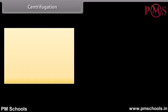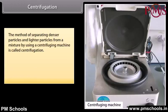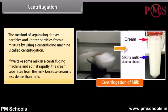Centrifugation: The method of separating denser particles from lighter particles in a mixture by using a centrifuging machine is called centrifugation. For example, if we take some milk in a centrifuging machine and spin it rapidly, the cream separates from the milk because cream is less dense than milk.